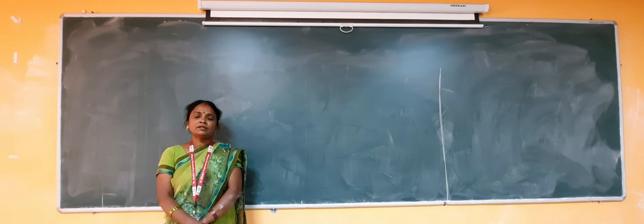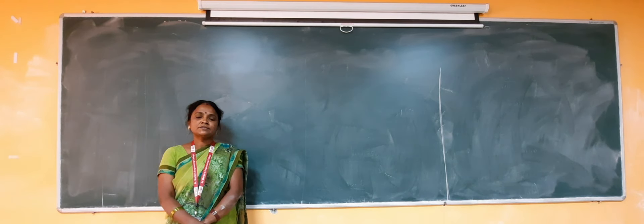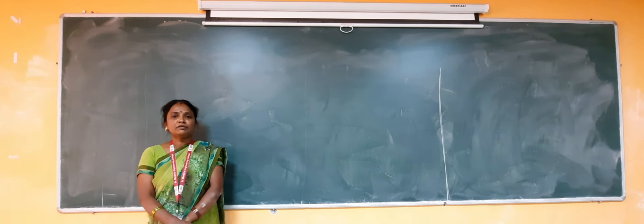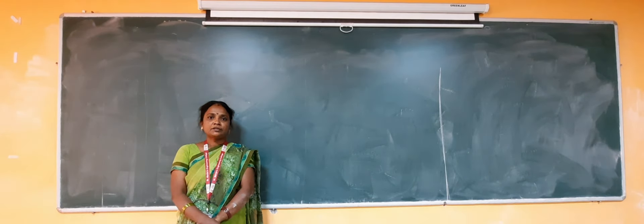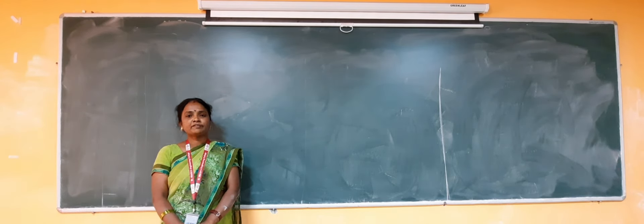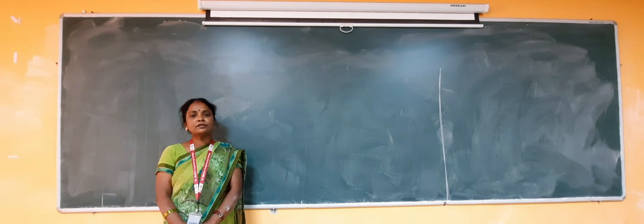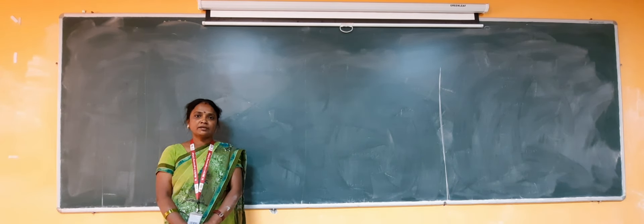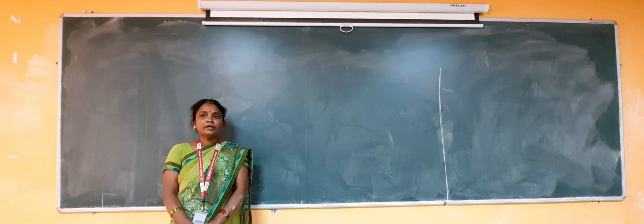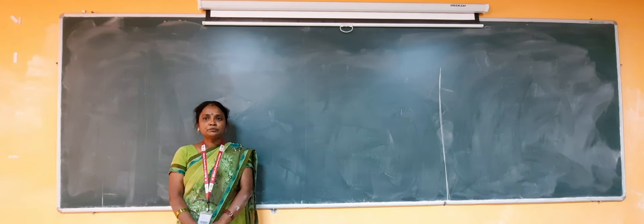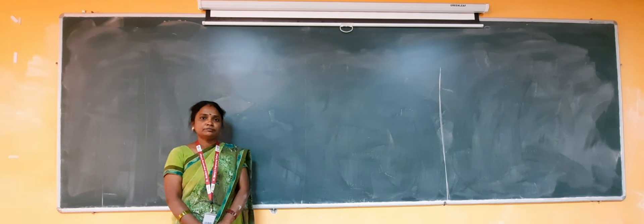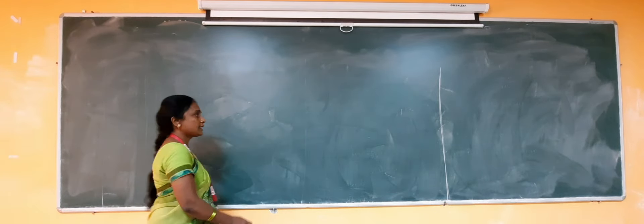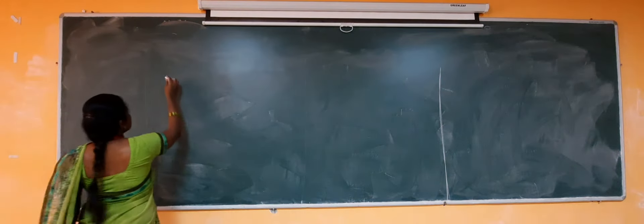We have so many Mean Value Theorems. There are three Mean Value Theorems according to the chapter. One is Rolle's Theorem, the second one is Lagrange's Mean Value Theorem, and the third one is Cauchy's Mean Value Theorem. Today I am going to explain Cauchy's Mean Value Theorem.